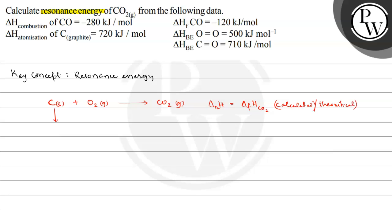First, we give delta H atomization so that carbon gets converted to carbon gas. Then for the oxygen molecule, we convert it into oxygen atoms by giving the bond energy of O=O. These combine to form carbon dioxide, and this will involve bond energy released — 2 times the bond enthalpy of C=O — because carbon dioxide has the structure O=C=O.